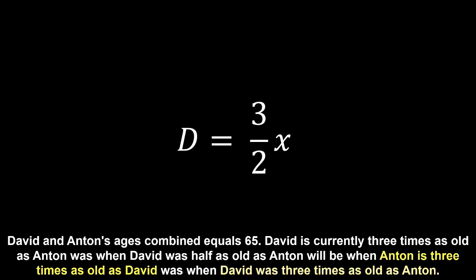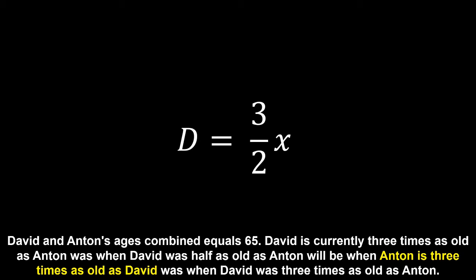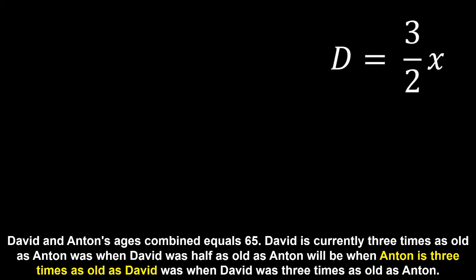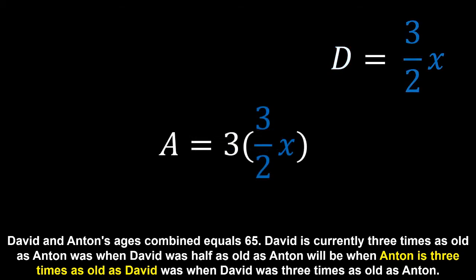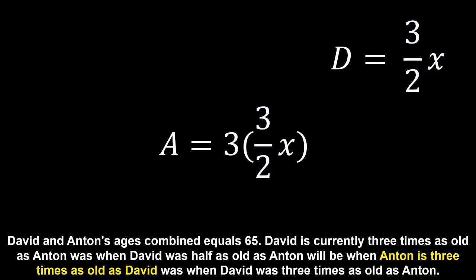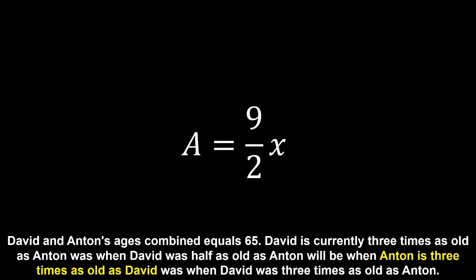Moving to the preceding time frame, we want to get Anton's age when he will be three times David's age in the final time frame. We represent Anton's age in this time frame as three times David's age, then substitute David's age with the definition from the previous formula. We have Anton's age being three times three on two times the age difference, which we can further simplify to nine on two times the age difference.